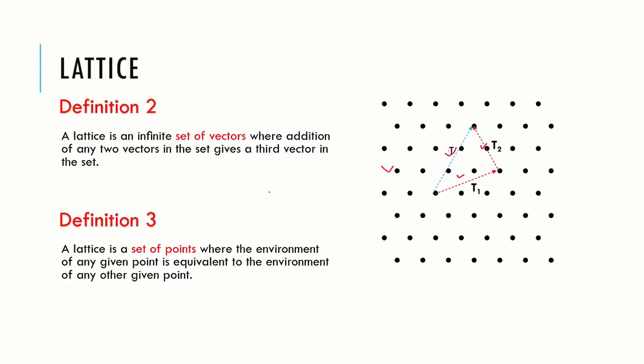A third equivalent definition: a lattice is a set of points where environment of any given point is equivalent to the environment of any other given point. For example, here point a is equivalent to point b because a has similar surrounding as point b.